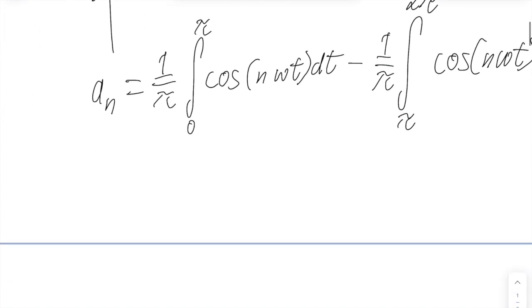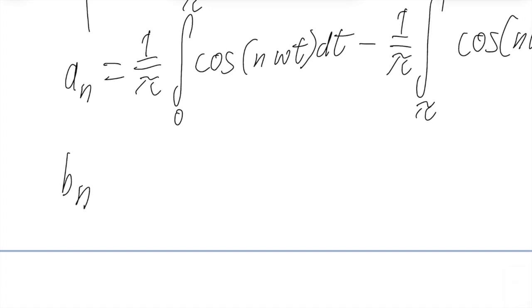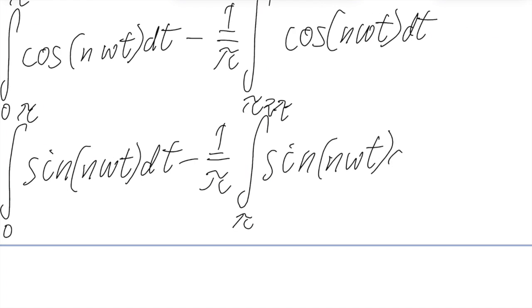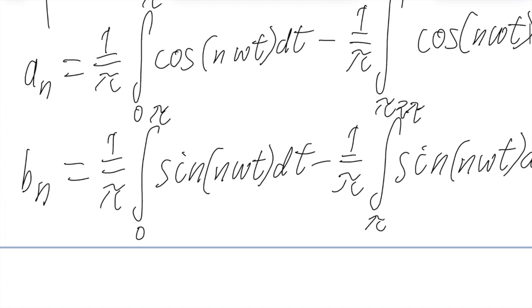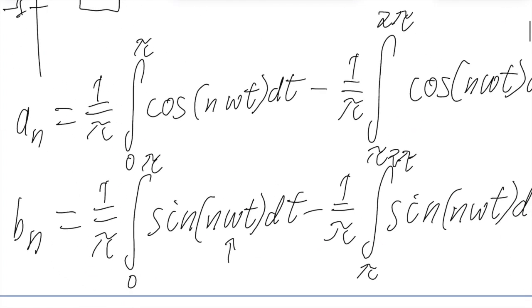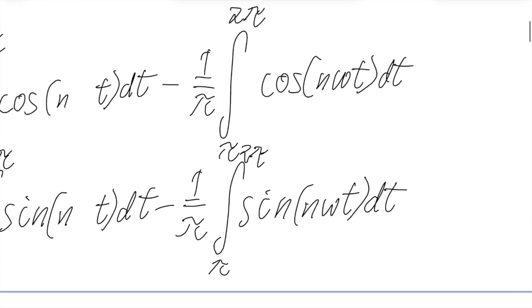And we can do a similar thing with b_n. Let's figure out our frequency. This has the same period as a normal sine wave. It'll also have the same omega as a normal sine wave, which will be one. So this means that we can get rid of the omega everywhere because it's just one.